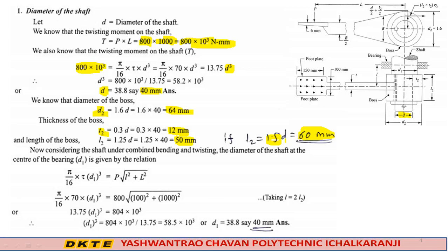Now, considering the shaft under combined bending and twisting, the diameter of the shaft at the center of the bearing d₁ is given by the relation: π/16 × τ × d₁³ equals P × √(l² + L²). This is the design formula.